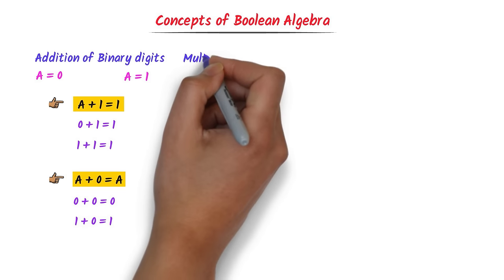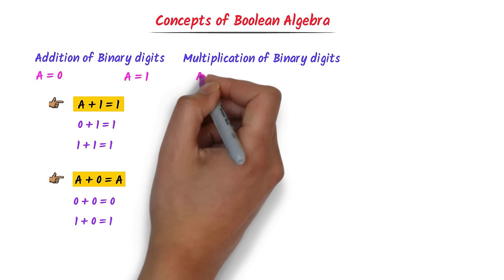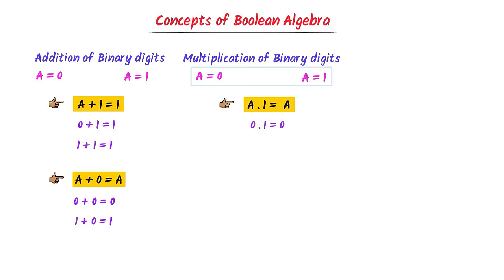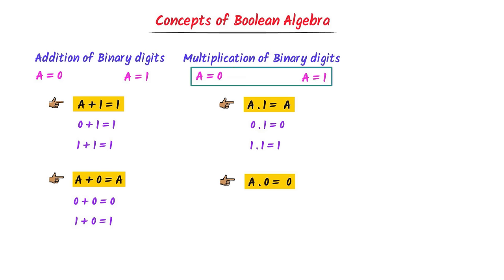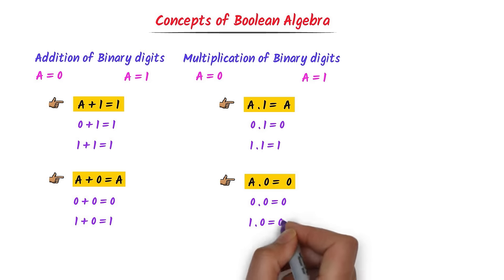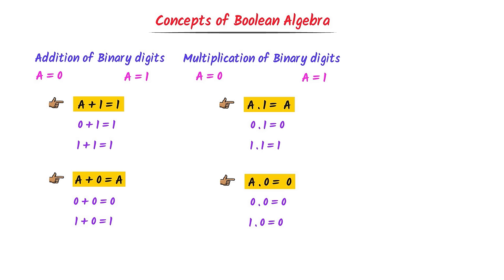Let me teach you the multiplication of binary digits. Let a equal 0 or a equal 1. First, a times 1 is equal to a: 0 times 1 equals 0, or 1 times 1 equals 1. Second, a times 0 is equal to 0: 0 times 0 equals 0, or 1 times 0 equals 0. Addition and multiplication of binary digits are very simple.